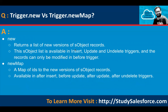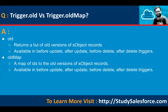Trigger.new versus Trigger.newMap: trigger.new returns a list of new versions of sObject records. This list is available in insert, update, and undelete triggers. Records can only be modified in a before trigger context — in after context trigger.new is read-only. Trigger.newMap is a map of IDs to the new version of sObject records, available in insert, before update, after update, and after undelete triggers.